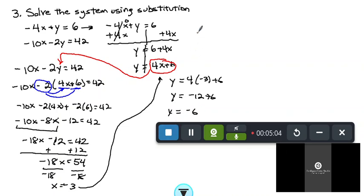So the ordered pair then is actually negative 3 comma negative 6. Done. Thank you.